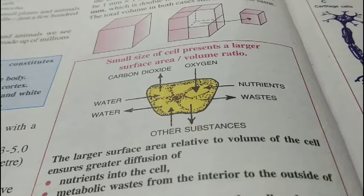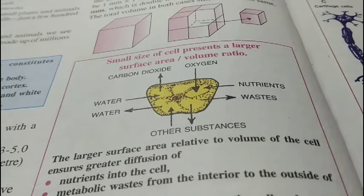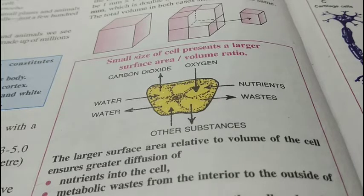If any organism is made up of a few number of cells — just a few hundred cells or a few thousand cells — then it is called a few-celled organism. For example, spirogyra and volvox.